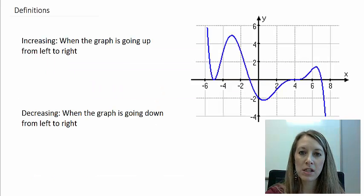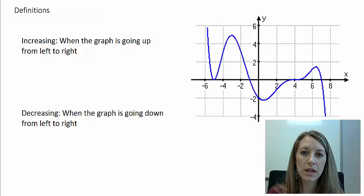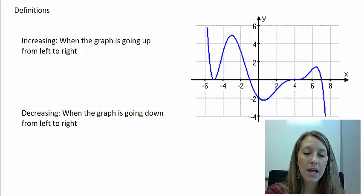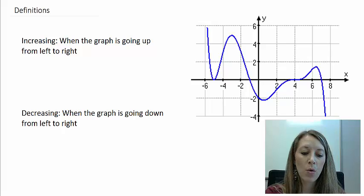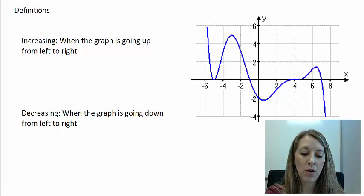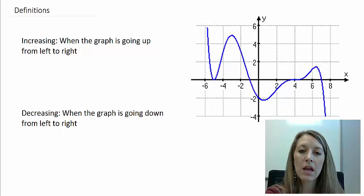The first definition is pretty obvious. Increasing is when the graph is going up from left to right, and decreasing is when the graph is going down from left to right. I have a sample graph here — we're going to indicate where this graph is increasing and decreasing, first by shading, and then we'll pick appropriate intervals.